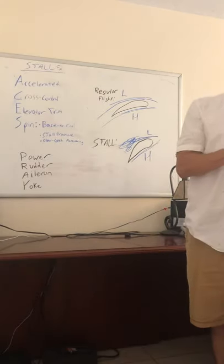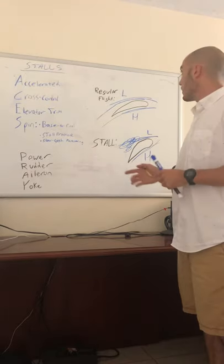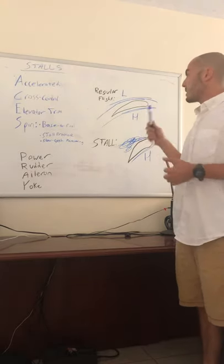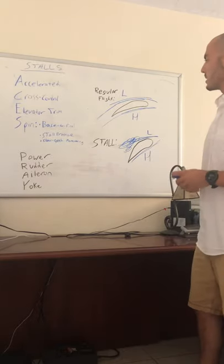So for us to get into a spin, we're actually going to need to have one wing stall while the other wing is not stalling and still producing lift. A couple scenarios where that could happen would be base to final.